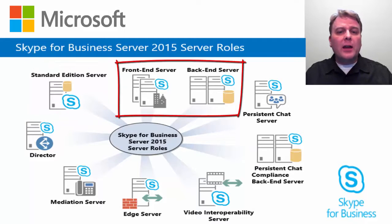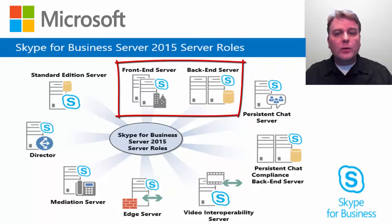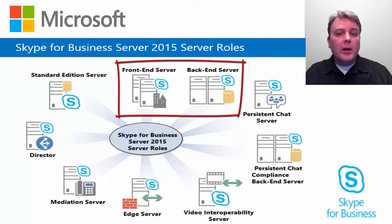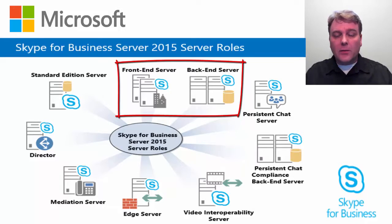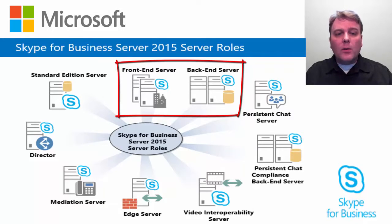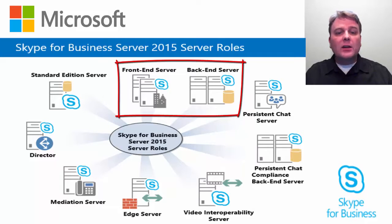In Skype for Business Server Enterprise Edition, the front-end server is the core server role and runs many basic Skype for Business Server functions. The front-end servers, along with the back-end servers, are the only server roles required in any Skype for Business Server Enterprise Edition deployment. A front-end pool is a set of front-end servers configured identically that work together to provide services for a common group of users. A pool of multiple servers running the same role provides scalability and failover capability. Additionally, one front-end pool in the deployment also runs the central management server.